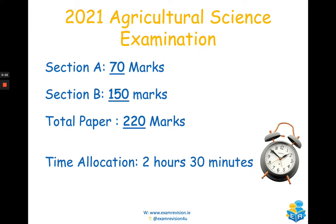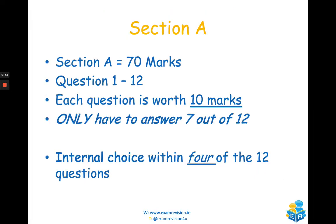The total paper is out of 220 marks and it's divided into two sections. Section A is worth 70 marks and is essentially your short answer questions. Section B is your longer questions and worth 150 marks. Your total time allocation for the exam is 2 hours and 30 minutes.